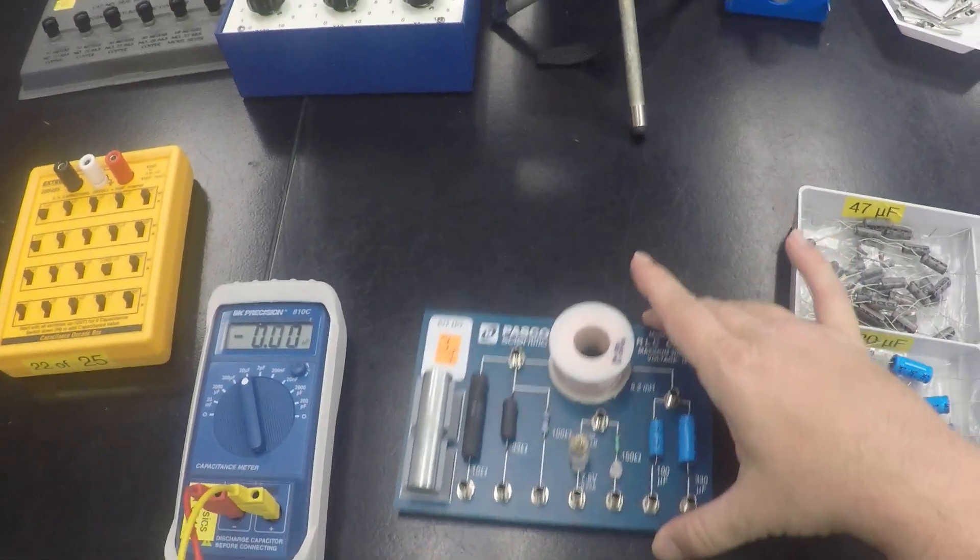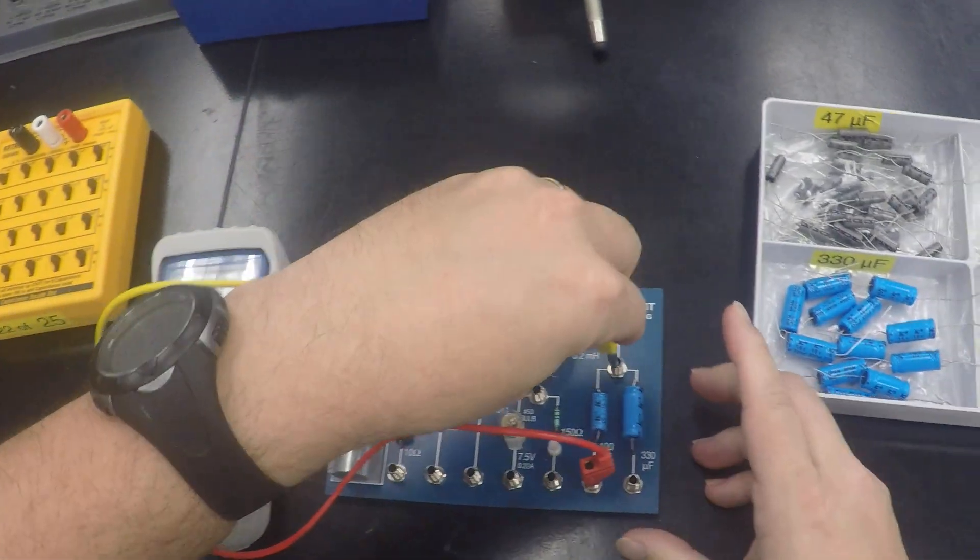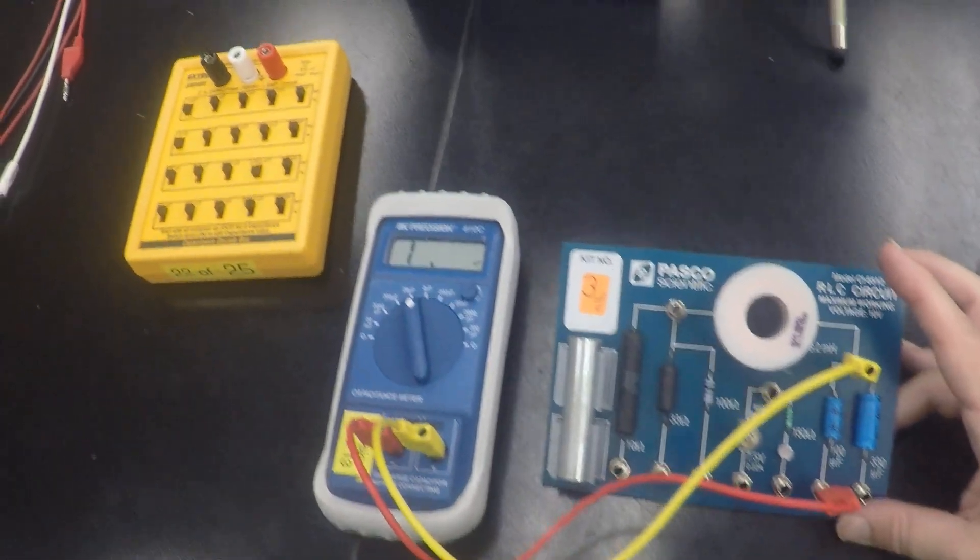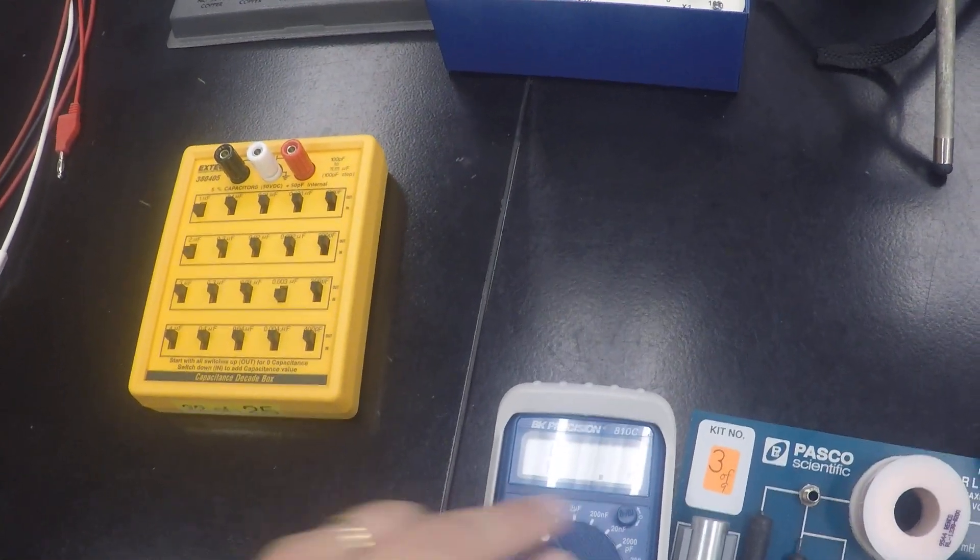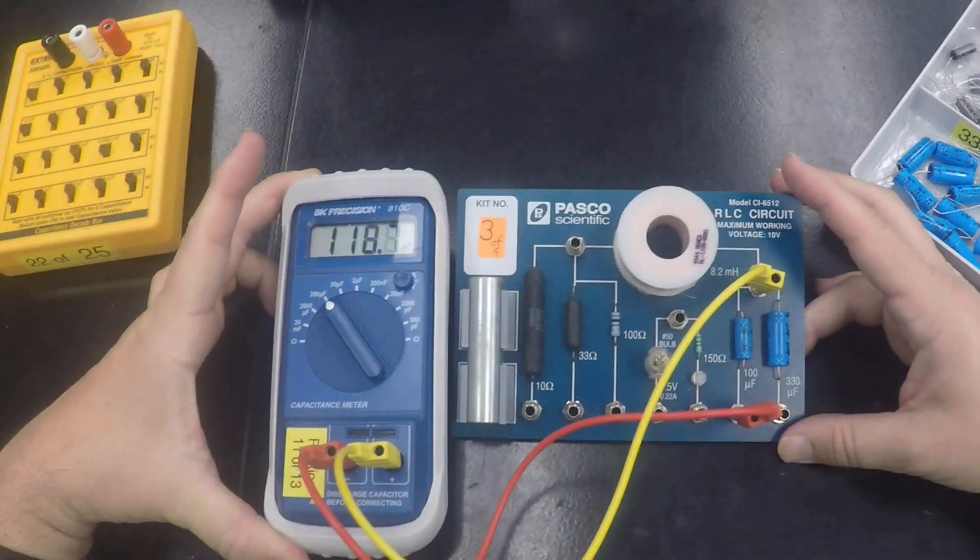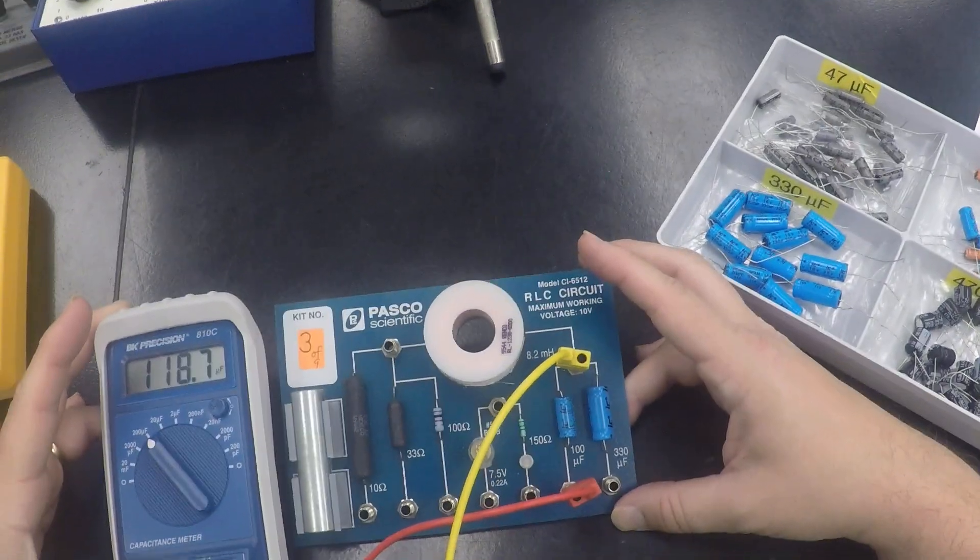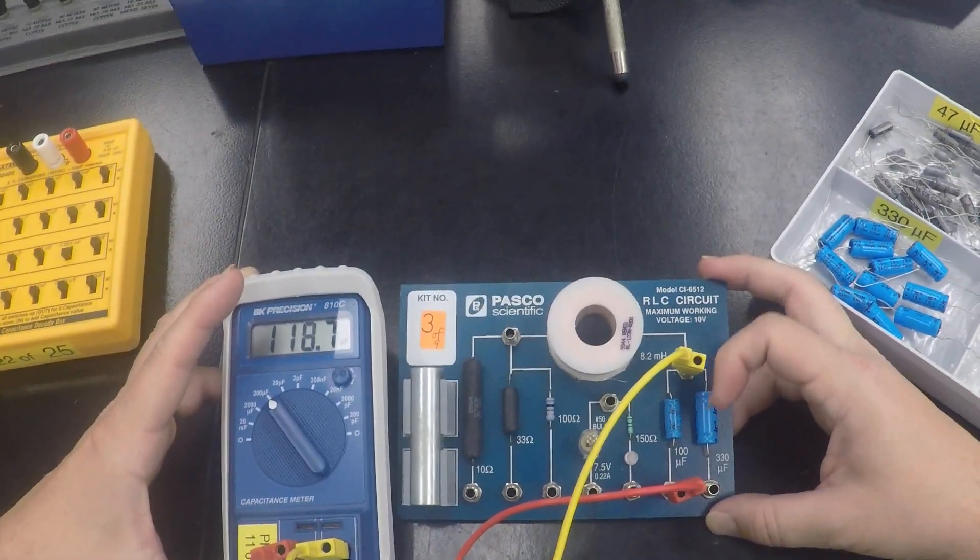So if we come over to the circuit board, and let's say we plug into each side of the 100 microfarad capacitor. We come back to our meter, and we dial into the correct setting. We see that we have about 118 and change, which is quite off from the reading, granted. But that's what the meter is giving us for him.